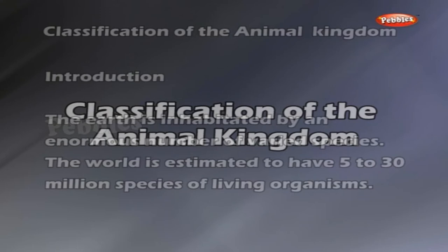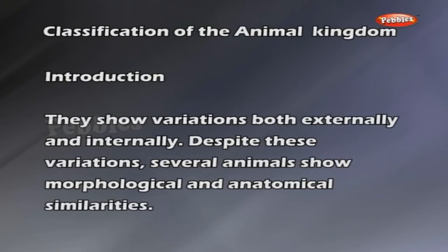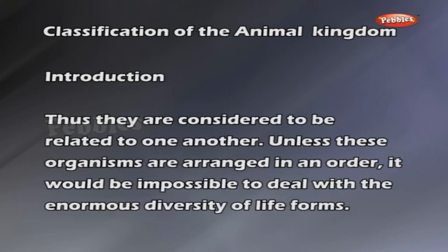Introduction. The earth is inhabited by an enormous number of varied species. The world is estimated to have 5 to 30 million species of living organisms. They show variations both externally and internally. Despite these variations, several animals show morphological and anatomical similarities. Thus, they are considered to be related to one another. Unless these organisms are arranged in an order, it would be impossible to deal with the enormous diversity of life forms.